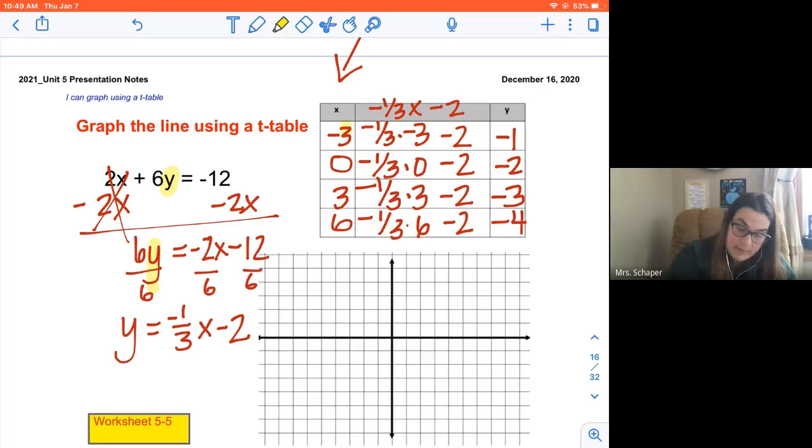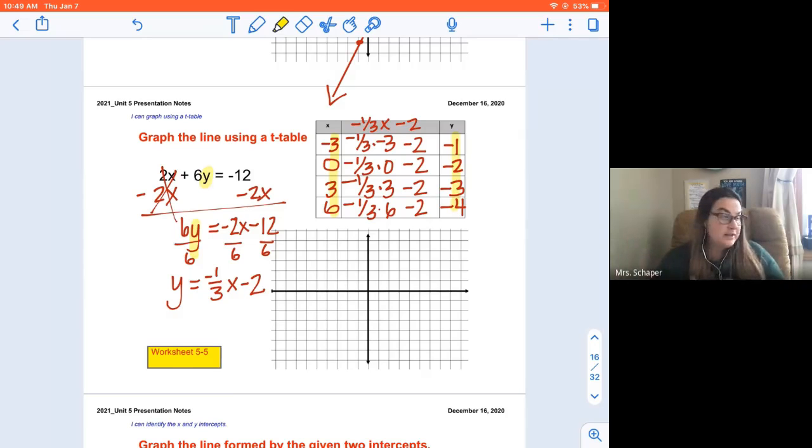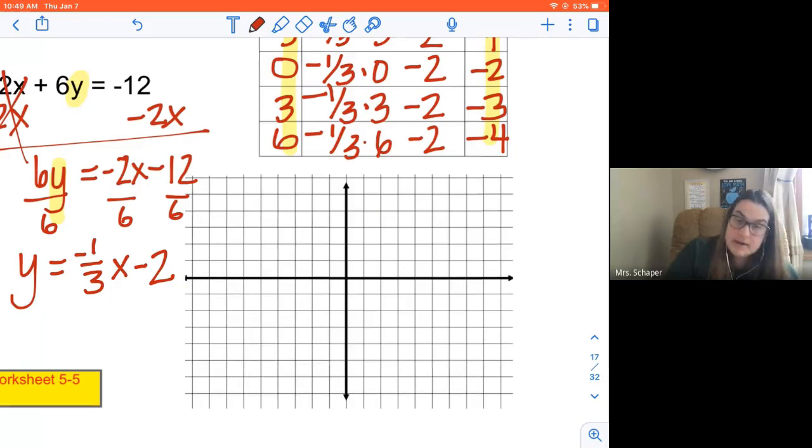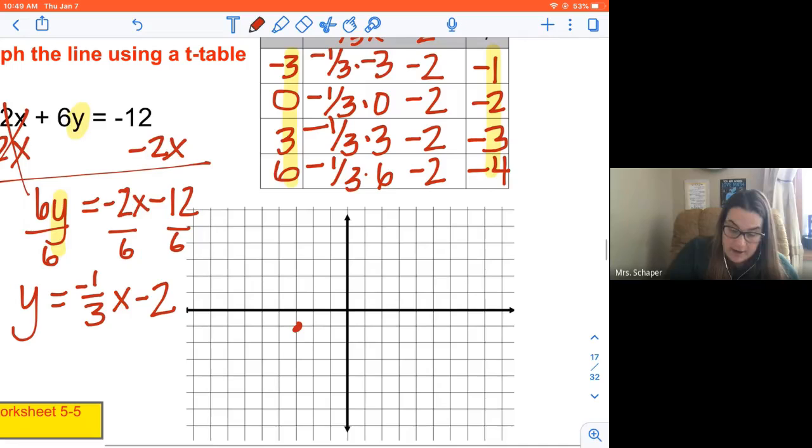Now I have my x values and my y values and I can graph them. And by the way, calculator use is allowed this entire time, so if you find it to be more efficient to type that into your calculator, I have no problem with that. So when I'm taking a look here, I've got -3, -1. I always go back and start at the origin. I've got 0 and -2. I've got 3 and -3. So the first number, my x, tells me how to go sideways. My y tells me how to go up and down. And then 6, -4, 1, 2, 3, 4, 5, 6, 1, 2, 3, 4, right here.